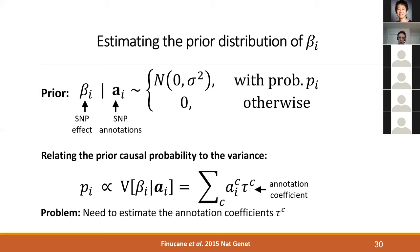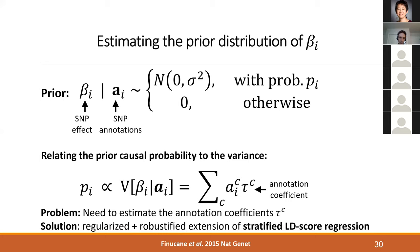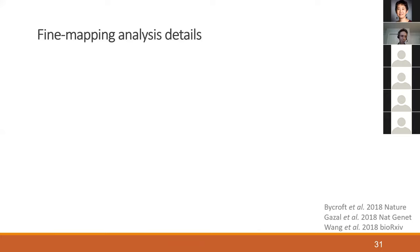We need to estimate the annotation coefficients tau_c, and we use a regularized and robustified extension of S-LDSC rather than the regular version. In one sentence: this regularization gives us more accurate estimates at the cost of some bias. In our goal we are willing to accept slightly biased estimates in order to get more accurate ones — it's a classic bias-variance tradeoff.